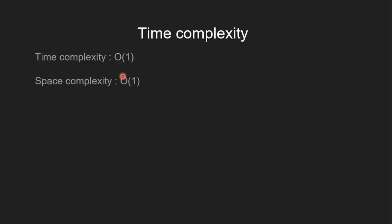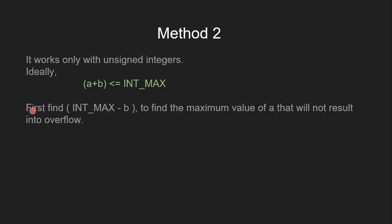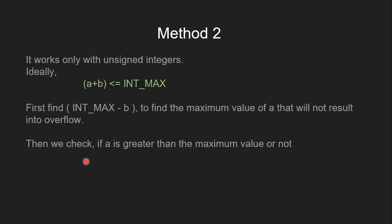Let's see the second method. It works only with unsigned integers. Ideally the sum of a and b should be smaller than or equal to INT_MAX, which is the maximum value that can be represented using an integer type variable. So first we find INT_MAX minus b to find the maximum value of a that will not result in overflow, and then we check if a is greater than that maximum value or not. Let's see the code for the same.